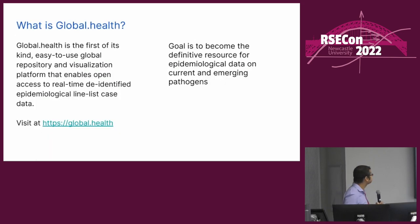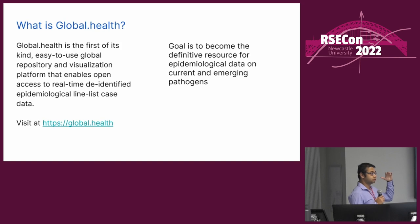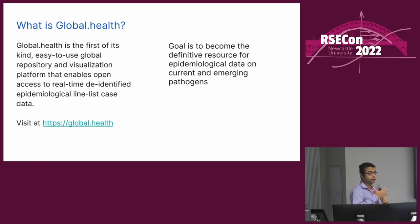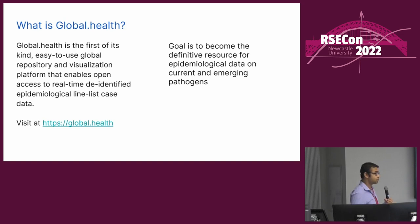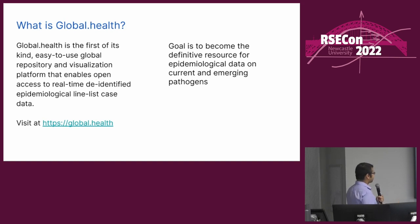So what's global.health? It's the first of its kind global repository of line list data. A line list is a list of information about COVID-19 patients. We started collecting this from the beginning of the pandemic and developing this platform so that people could submit data or we could get data from government agencies and put them into a unified schema. This is all de-identified and anyone can access it — sign up at global.health, agree to the T&Cs, and you can download the data and use it in your research. Our goal is to become the definitive resource for epidemiological data on not just COVID-19 but emerging pathogens as well.